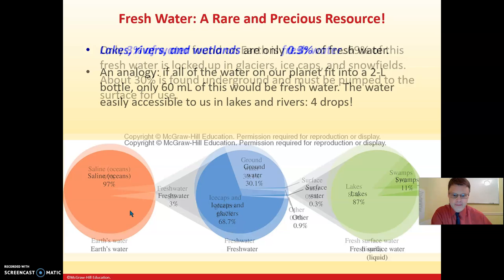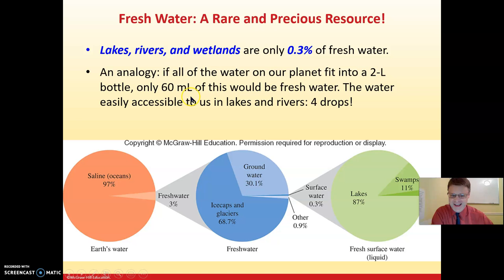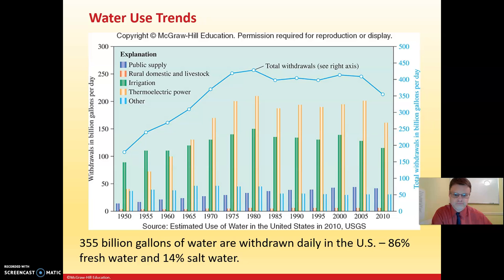As an analogy: if this were two liters of water representing all the water on Earth, only 60 milliliters — 0.06 liters — would be fresh water, and the easily accessible water would be just four drops. A very, very small amount.